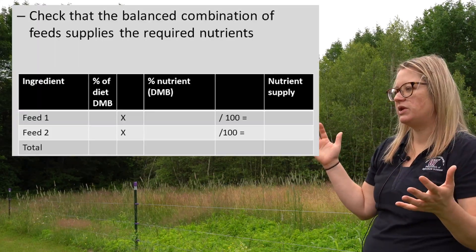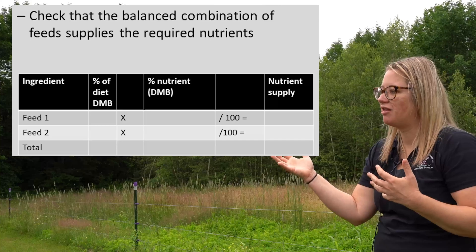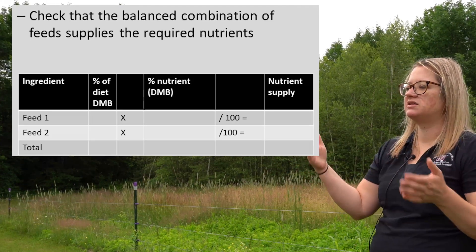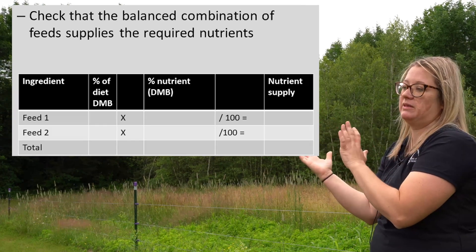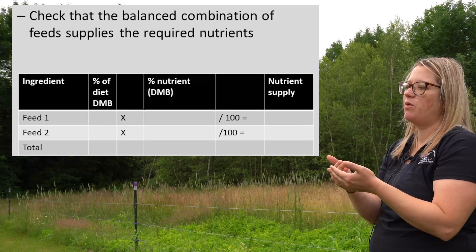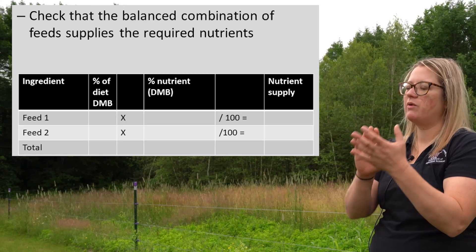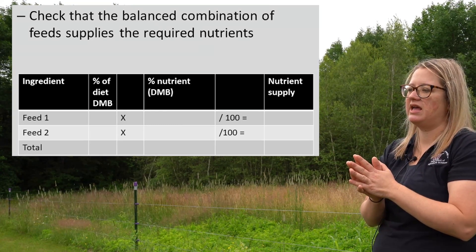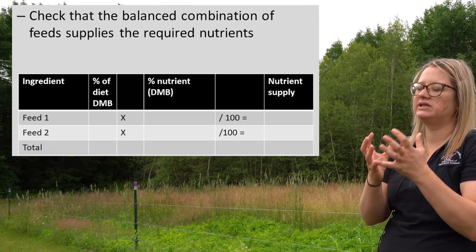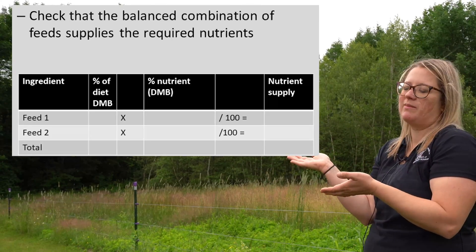The last step is to check your answer. Checking is important because math errors can creep in — a misplaced decimal, for example. To check, take the proportions you calculated and multiply them by the nutrient content of each ingredient, converting to a decimal first. This gives you the nutrient contribution of each ingredient. When you add them all up, they should equal the animal's requirement if you've done the Pearson square correctly.